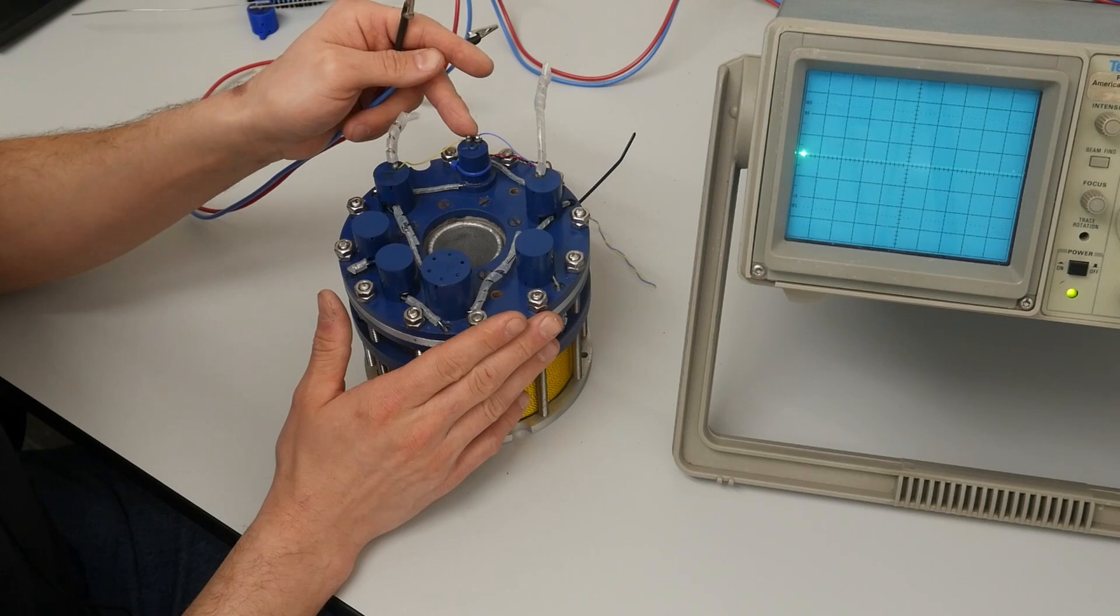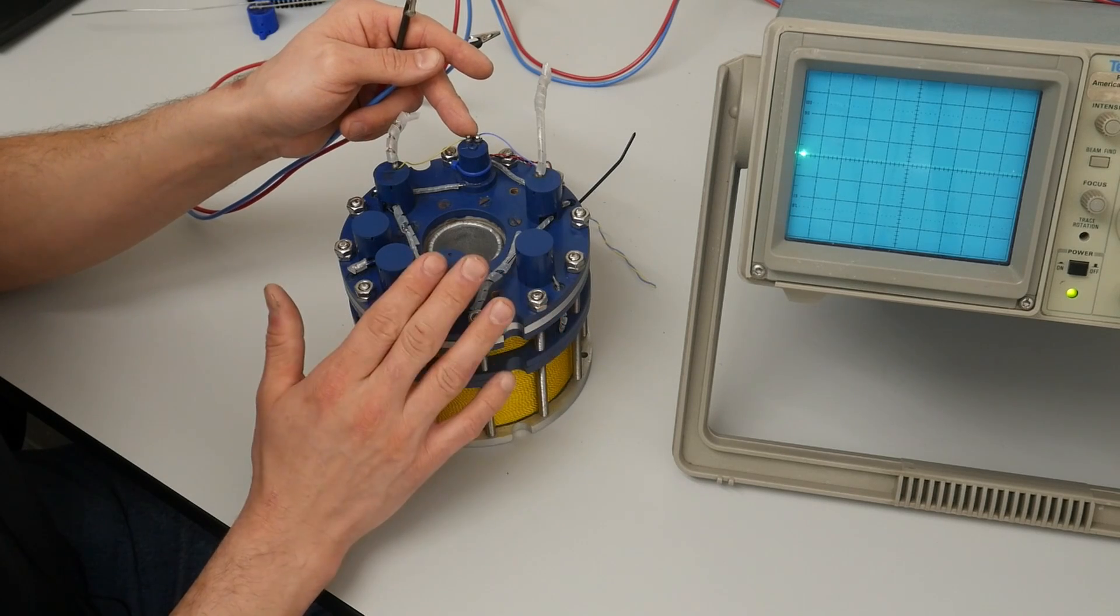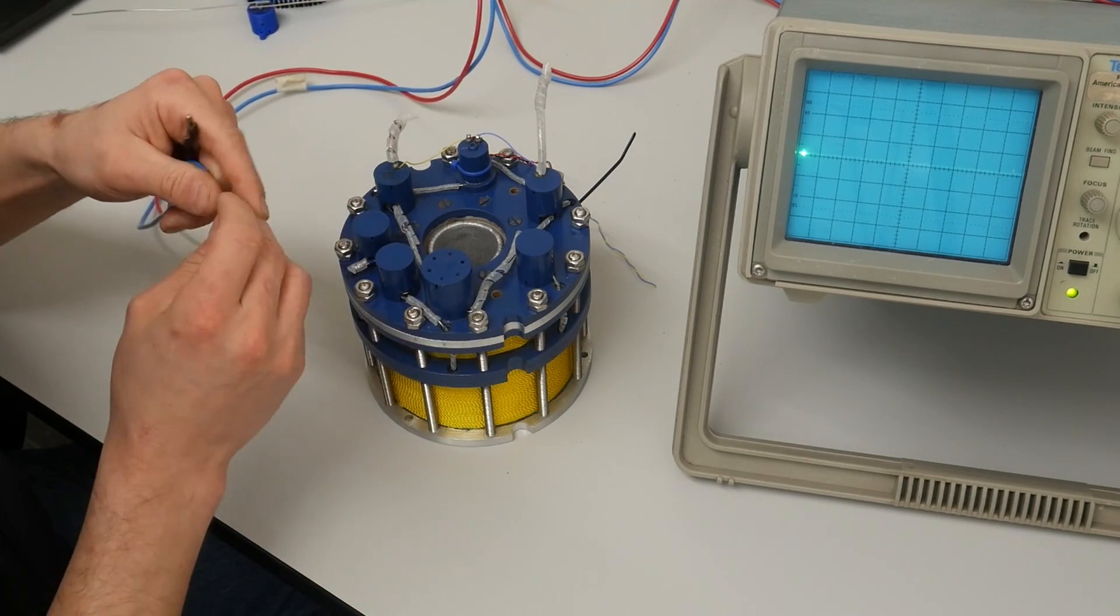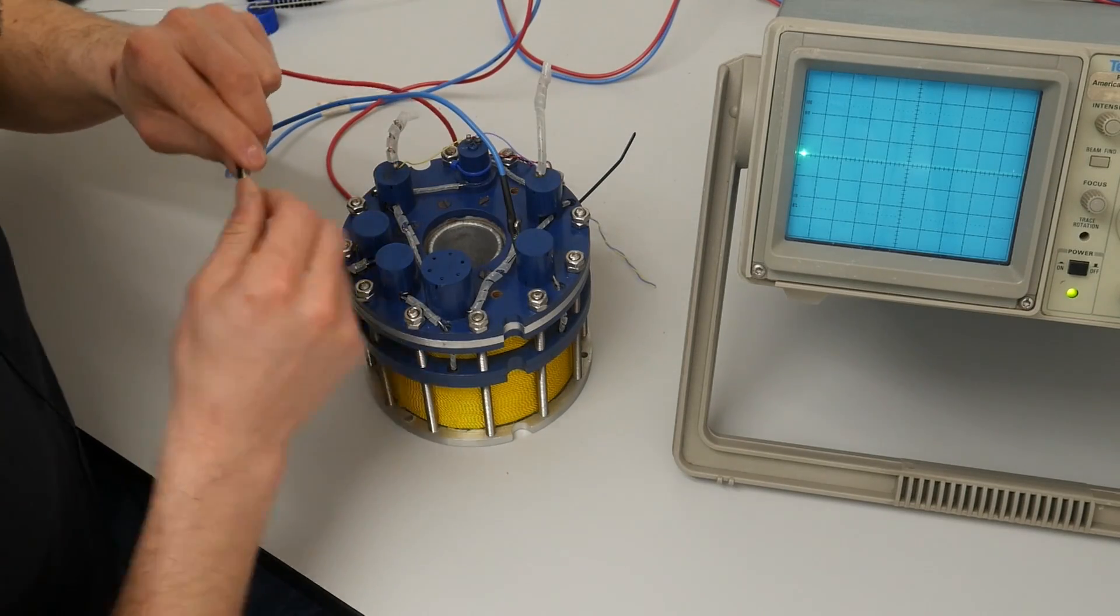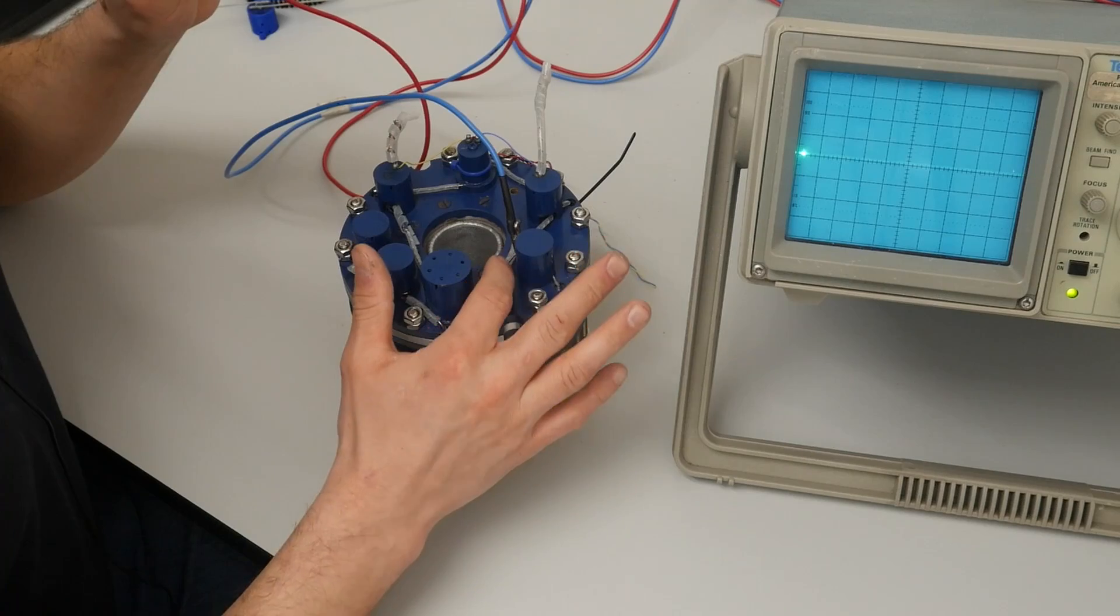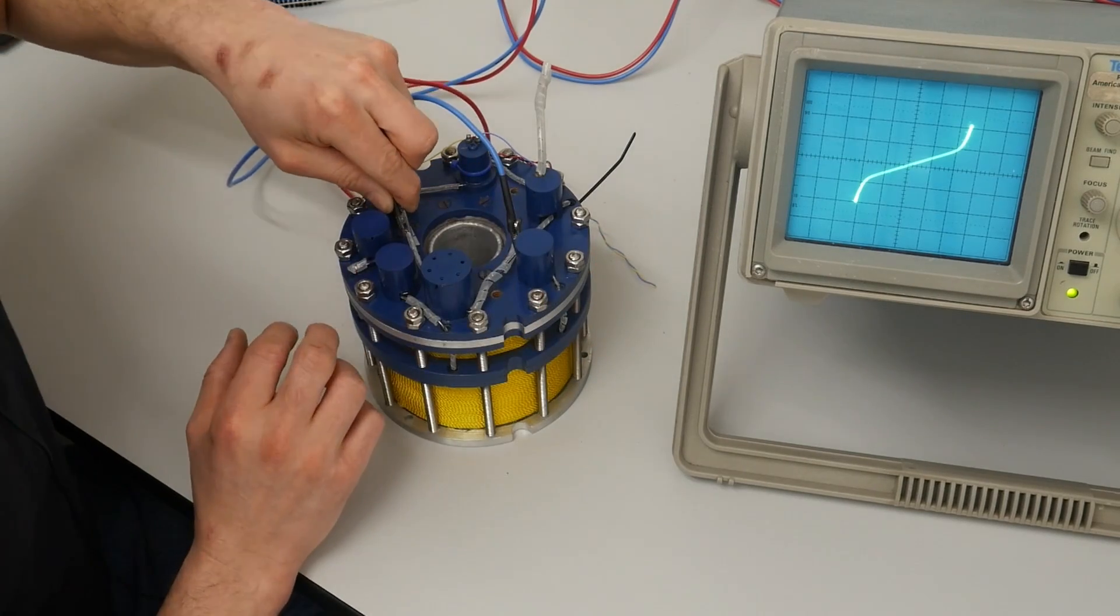It allows a lot of current to flow around the diode even with a curve tracer. So I'm going to clip onto each lead coming out of the diode.